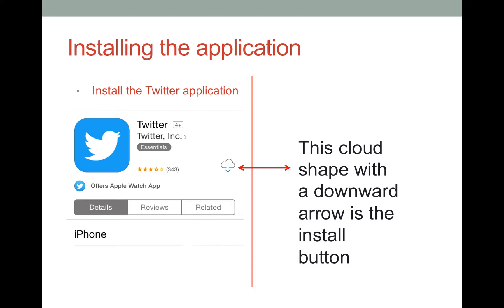Once you type in Twitter, this app will show. Click on the cloud-shaped icon with a downward arrow in it — this is also known as the installation button. Once the Twitter app is installed, tap on it to open it and the process of setting up your account will start.